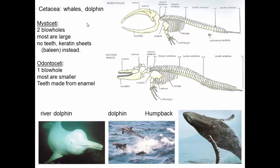Our first group are cetaceans: whales and dolphins. There are two major groups. Mysticeti are whales with two blowholes; most are very large and are filter feeders — they don't have teeth, instead they have sheets of baleen made from keratin, like your fingernails. Here's a representative skeleton showing the very large mouth where the baleen hangs.